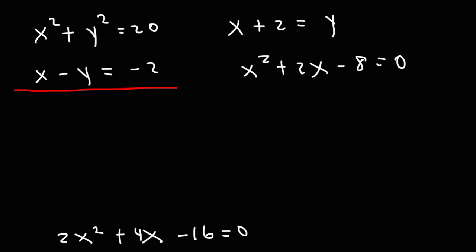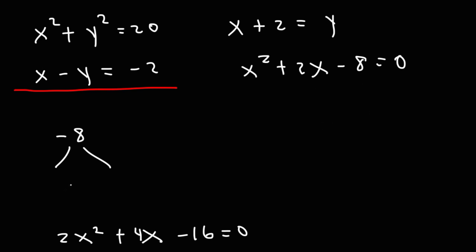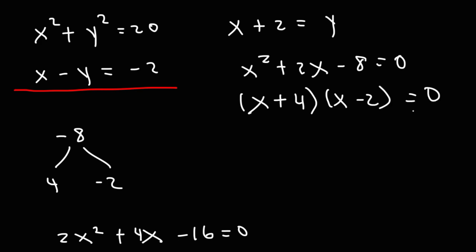Dividing by 2, we get x squared plus 2x minus 8 equals 0. This is a trinomial that can be factored. We need two numbers that multiply to negative 8 and add to 2: positive 4 and negative 2. So it factors as (x plus 4)(x minus 2), giving two possible solutions for x: negative 4 and positive 2.